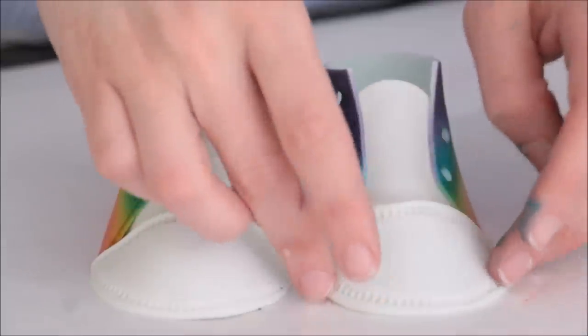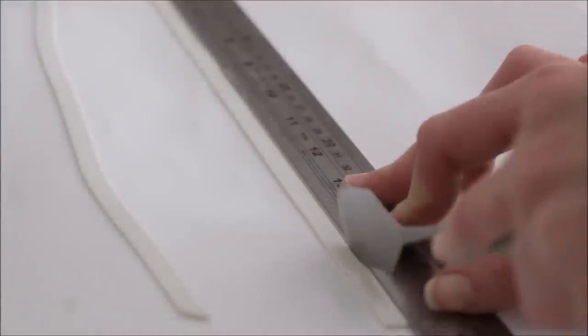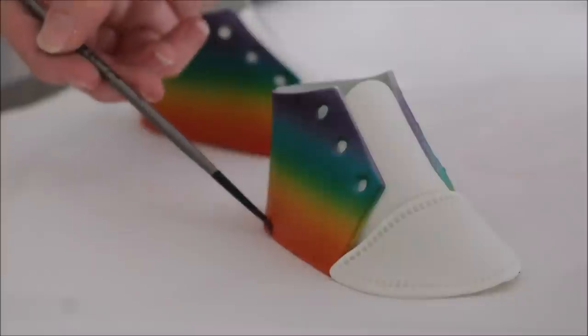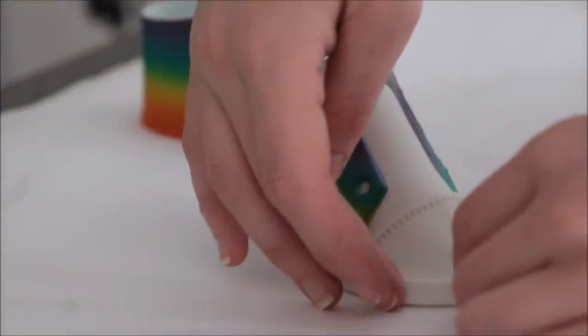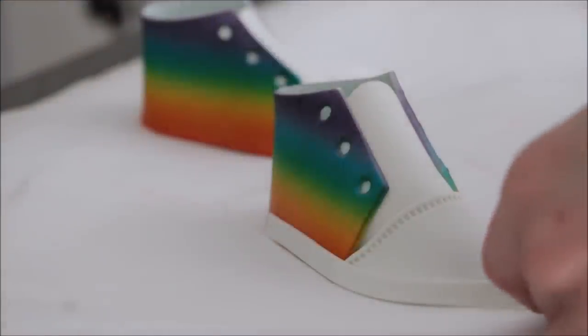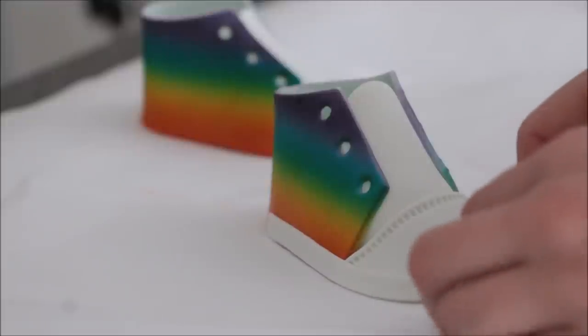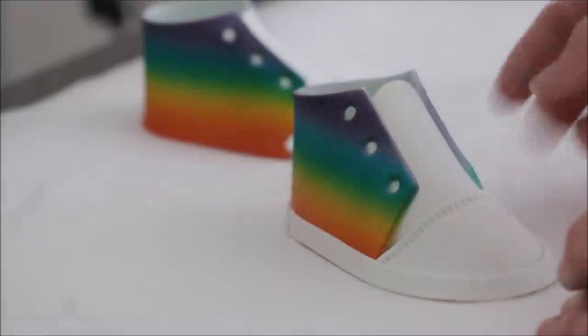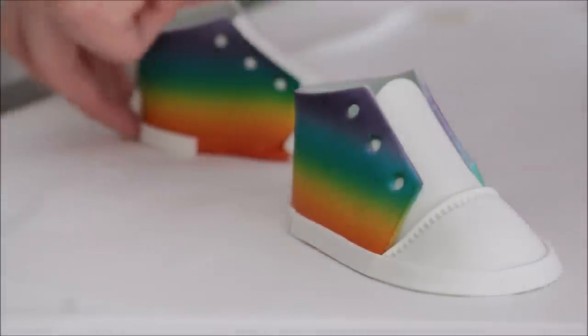I'm using a ruler to cut out strips of fondant, and that's going to go around the whole outside of the shoe. Be sure to start and end on the inside of the shoe, so when you look at it from the side you can't see where it begins and ends, if you know what I mean.